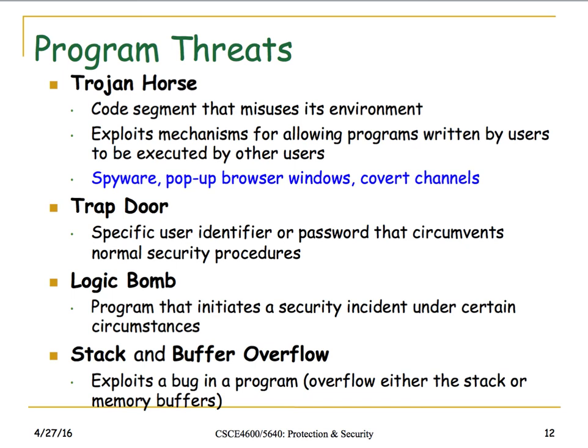Program threats — a trojan horse is code inside a program that misuses the environment: the program runs and launches a subroutine that opens a backdoor giving outside code access to the system. Examples include spyware embedded in browser extensions or software you install, pop-up browser windows, and covert channels or ports opened by software that let others in.